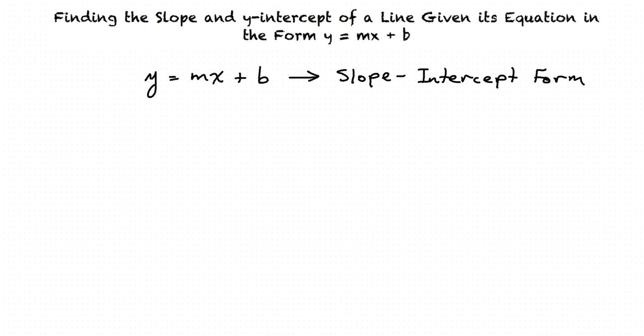We have the example y equals two-thirds x plus two. When the function is written in this form, the slope is the coefficient of x, so in this case it is two-thirds, or m equals two-thirds.